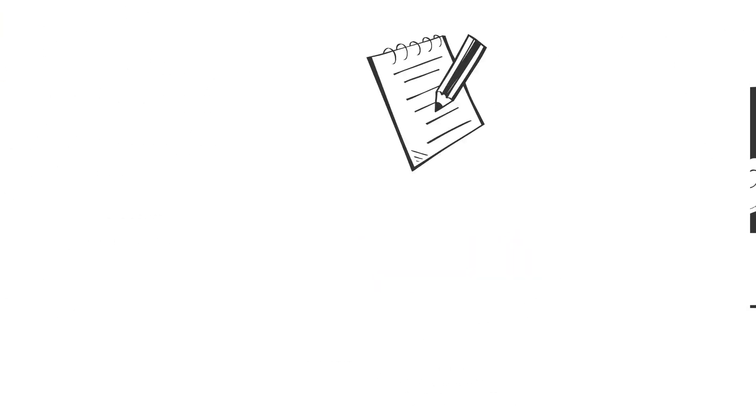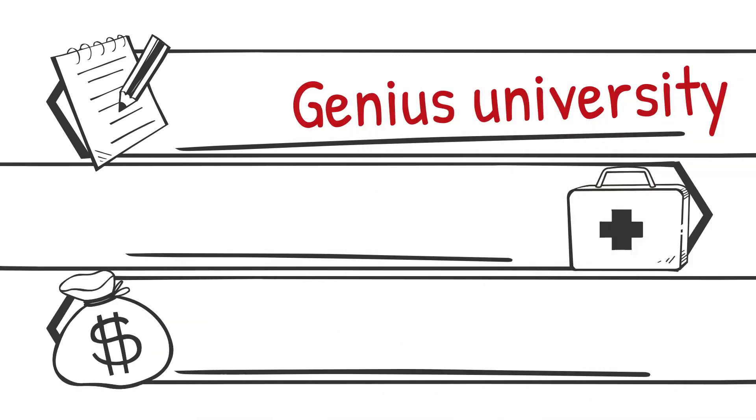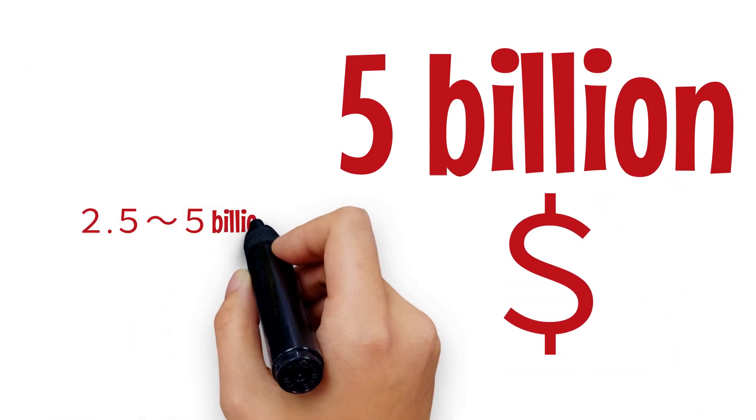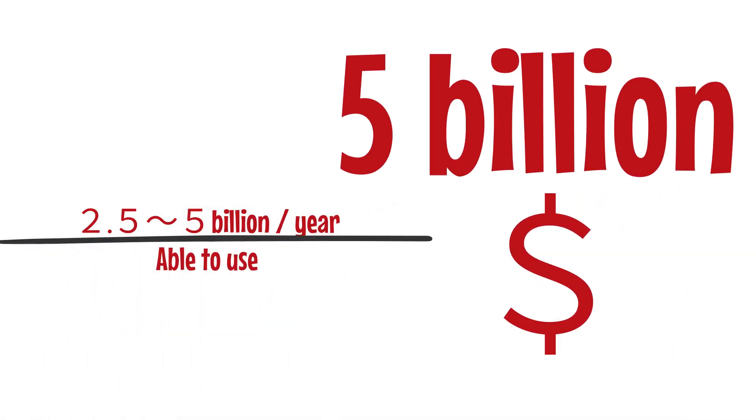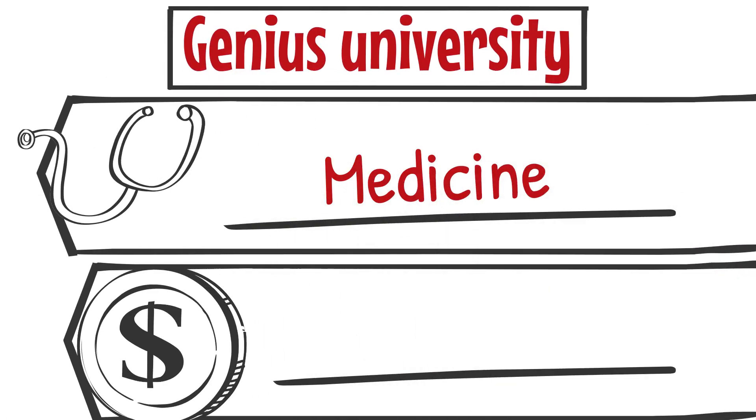Step four. To make the impossible possible using the hands of geniuses, we will create Genius University, Genius Hospital, and Genius Bank. Once our foundation's funds hit 500 billion yen, we will be able to use 25 to 50 billion yen a year. At Genius University, we will first invest in the School of Medicine and the School of Investment.